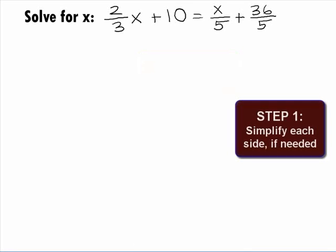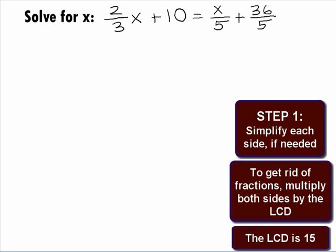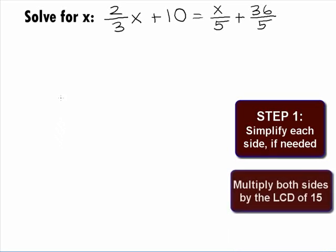In Step 1, we want to simplify each side if needed. It looks like we have some fractions that need to be cleared out, so it will make our problem a little nicer to work with. We can do this by multiplying both sides of the equation by our least common denominator. We have a 3 and a 5 for our denominator, so our least common denominator will be 15. Let's multiply both sides by that least common denominator of 15.